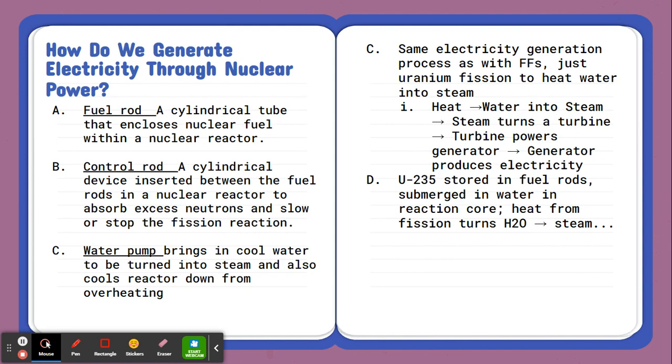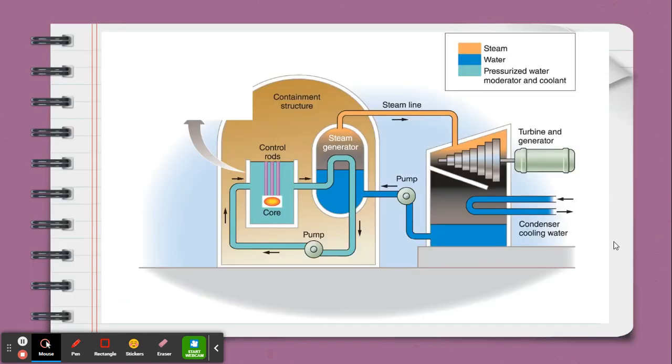So looking at the electricity generation process, it's really similar to how we go about generating electricity with all of our fuel types, especially coal. So here in this case, using nuclear fission, we bombard the nuclei of our uranium-235 with neutrons, causing it to split. This releases tremendous amounts of heat, which then heats up water, turning it into steam. Steam turns a turbine. That turbine powers a generator. And in this case, we produce electricity. So here it is outlined in the picture along with our notes.